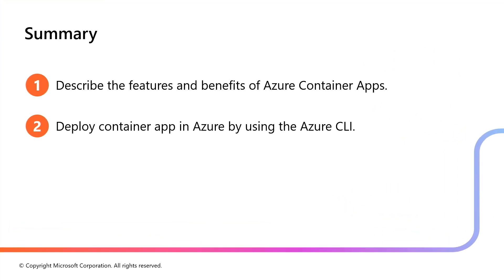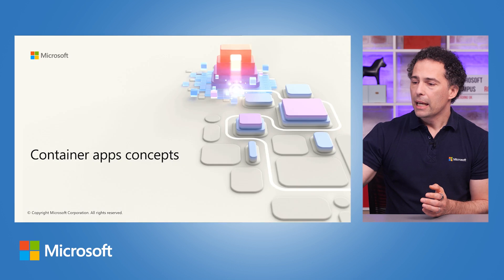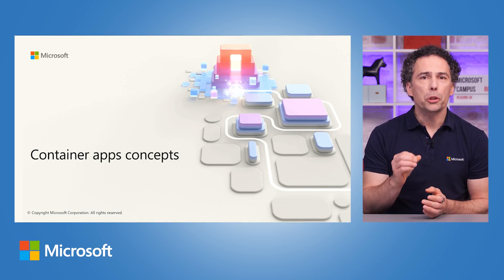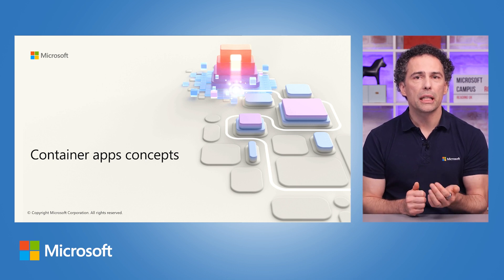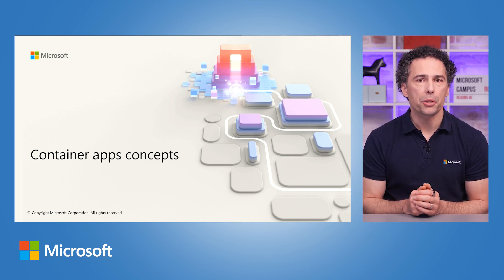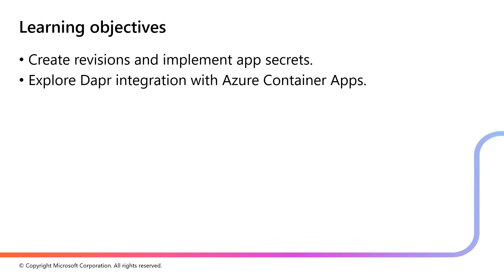In this unit, I went over the features and the benefits of Azure Container Apps and showed you how to deploy a container app in Azure by using the Azure CLI. In the next unit, we will touch on some very important Azure Container Apps concepts: revisions, secrets, and Dapr integration. We'll look at how to create revisions and implement app secrets, and how Dapr integration works and what it can do for you with Azure Container Apps.